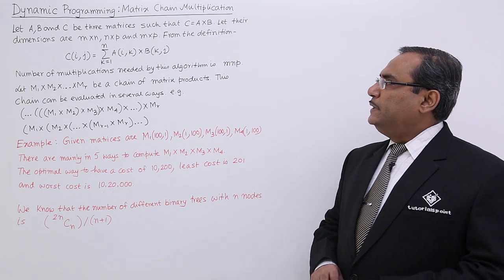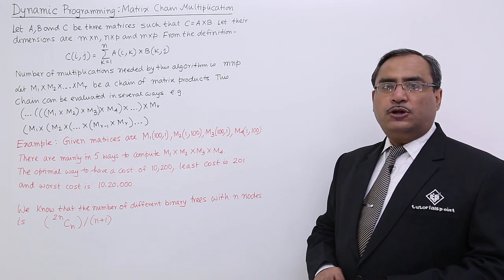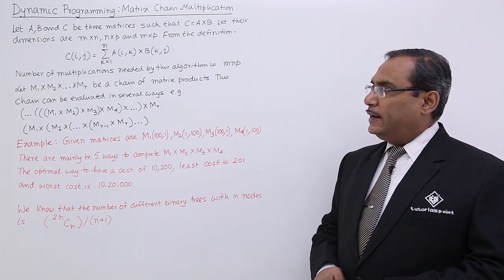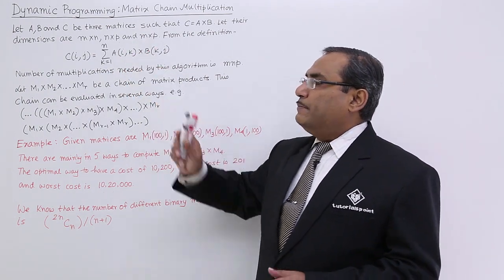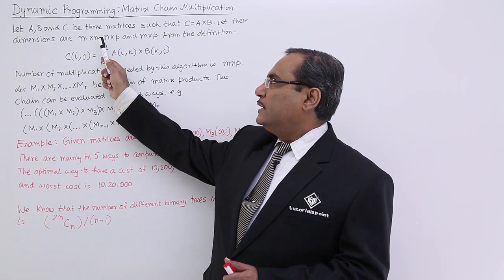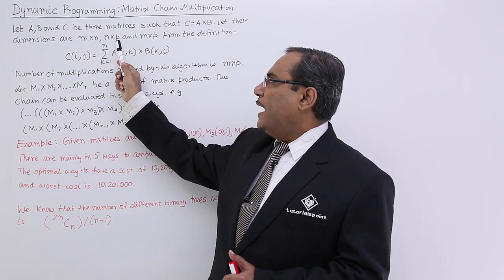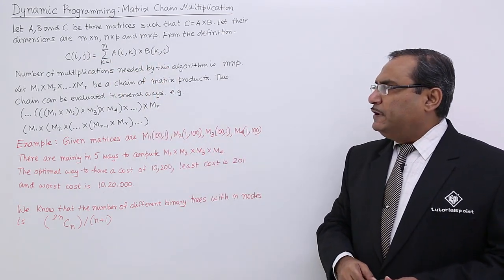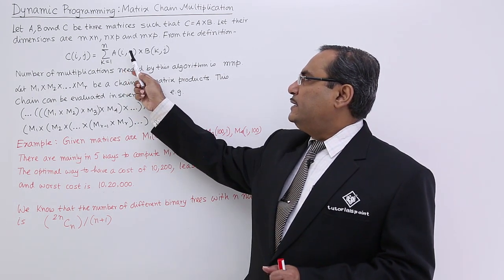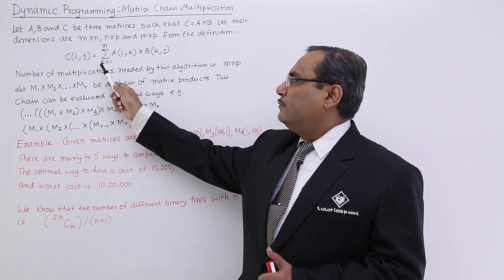Let A, B, and C be three matrices such that C = A × B. A and B are to be multiplied so that the resultant matrix is C. Their dimensions are M×N, N×P, and M×P. It is well known that the number of columns in the first matrix must equal the number of rows in the second matrix. The resultant matrix will have M rows and P columns. From the definition, C_ij = Σ A_ik × B_kj where k ranges from 1 to N.